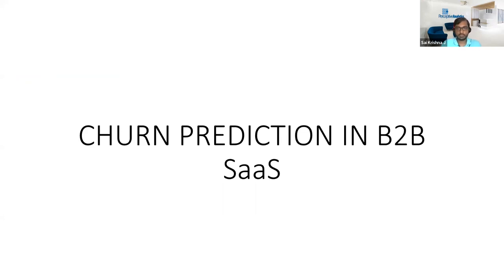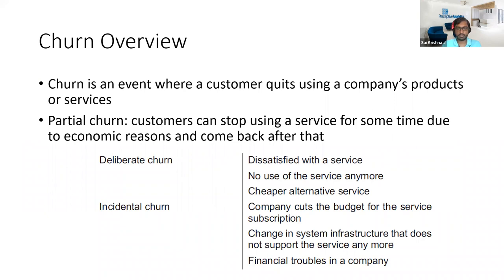Today we'll walk through a research paper about prediction of churn in a business-to-business software-as-a-service context. Before going into what technique was used, here's an overview of what churn is. Churn is an event where a customer quits using a company's products or services. There's also something called partial churn, where customers stop using a service for some time due to economic reasons and then come back.